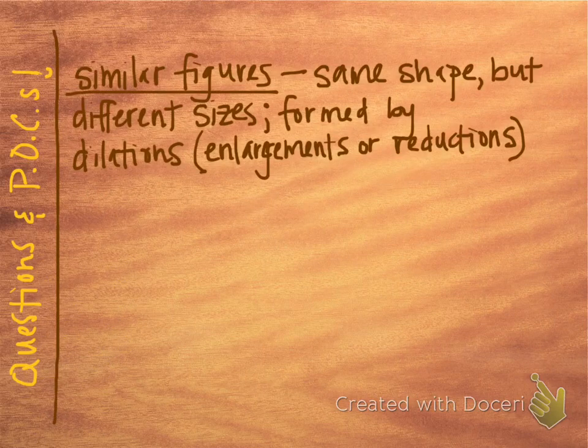To understand similarity, we need to understand what similar figures are. Similar figures are not congruent at all — we've done a lot with congruency over the year, but now we're going to switch gears. Similar figures have the same shape but different sizes, like a big one and a little one. They are formed by something called dilations. A dilation is when you either enlarge a shape or reduce the size of the shape.